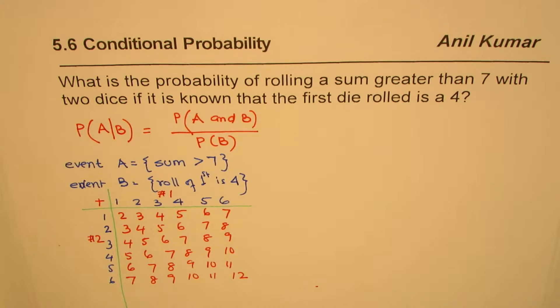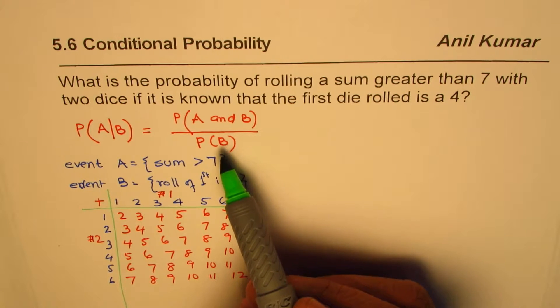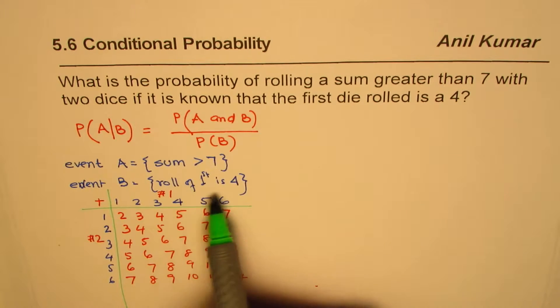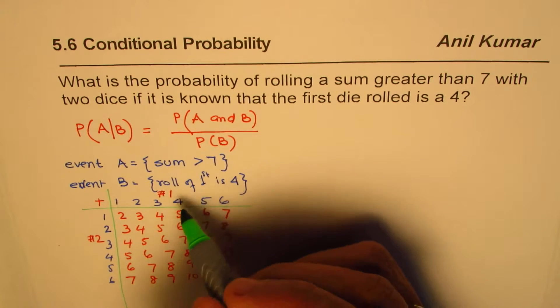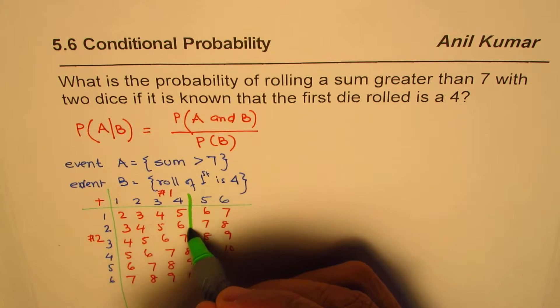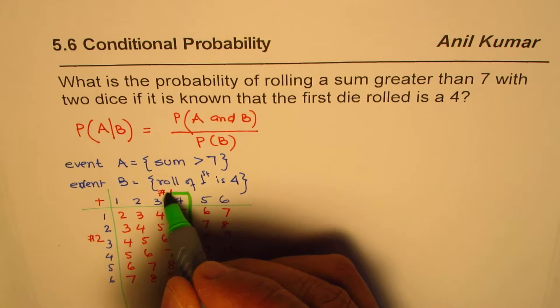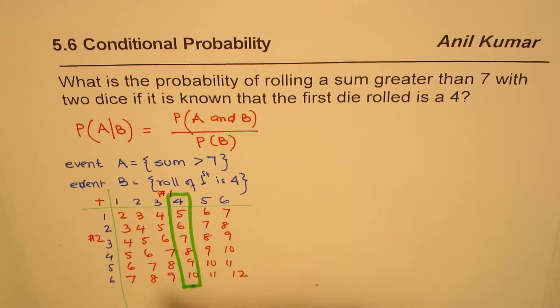Now from here, you can find the probability of both A and B happening, and also what is the probability of B. So let's look into this. What is the probability of B? B is rolling by first die and getting a number 4. So that is, we can look into this column. So that is what we get when we talk about probability of B.